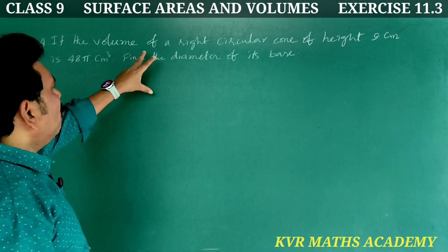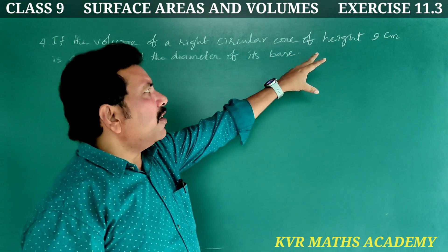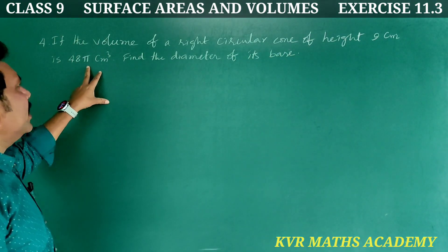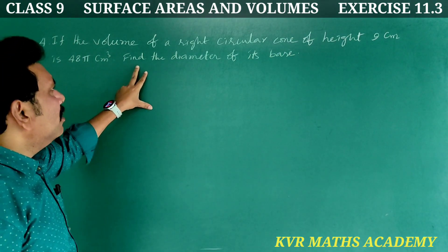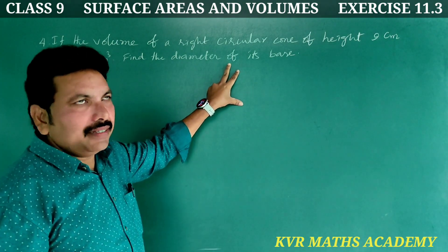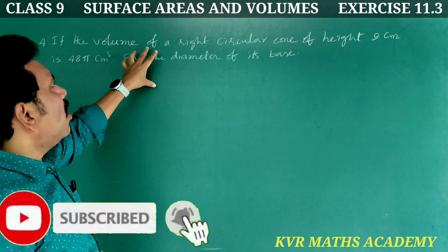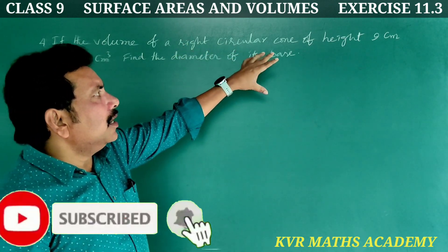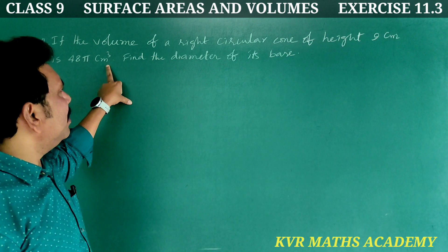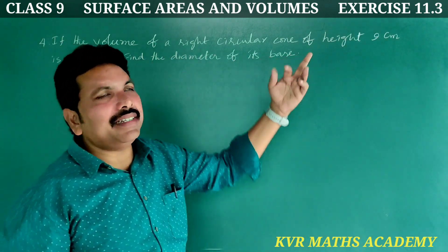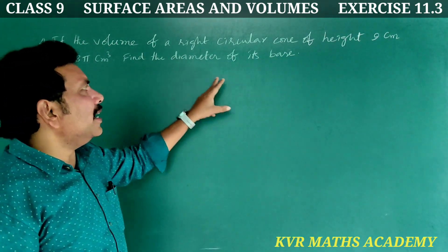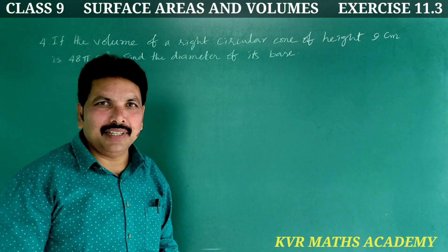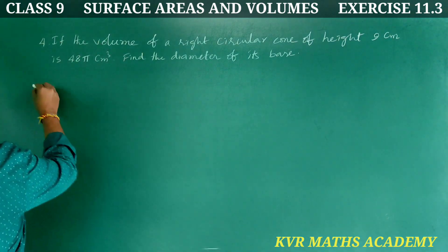4th question. If the volume of a right circular cone of height 9 centimeters is 48 pi centimeter cube, find the diameter of its base. Volume is 48 pi centimeter cube, height is 9 centimeters. Diameter to find out. Let us find solution.